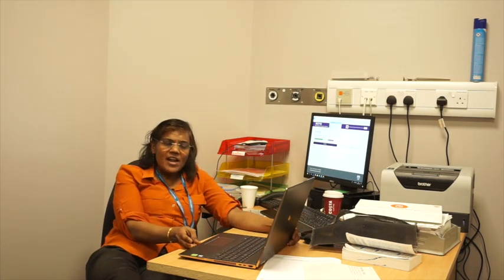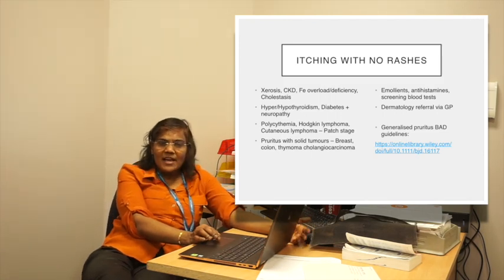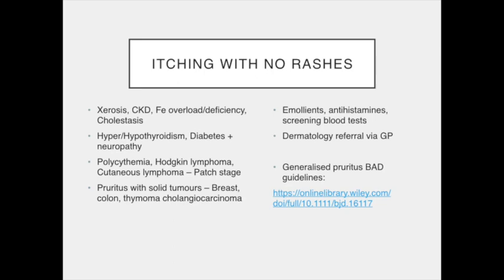Then comes itching only with no rashes. We need to look at the skin closely and background medical issues which can give rise to systemic causes for the pruritus. The first to consider is the elderly population with xerosis — dry skin — and metabolic problems like chronic kidney disease, iron overload such as hemochromatosis, or iron deficiency, and cholestasis from liver problems. Then endocrine problems with diabetes, thyroid disorders, and haematological issues such as polycythemia, Hodgkin's lymphoma, and cutaneous lymphoma. Metastatic solid tumours can also give rise to pruritus, especially from breast, colon, thymomas, and cholangiocarcinoma. The main management is to look for the cause, treat the skin with emollients and antihistamines, and run a screening blood test — the pruritus screen — which can pick up any underlying causes.